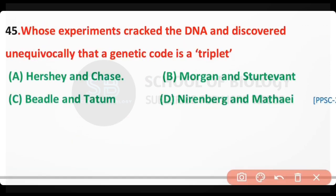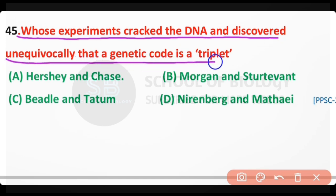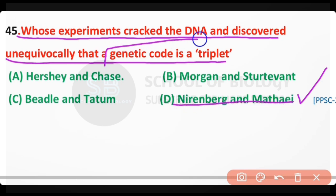Question number 45: Whose experiments cracked the genetic code and discovered unequivocally that the genetic code is a triplet? Options: Hershey and Chase, Morgan and Sturtevant, Beadle and Tatum, or Nirenberg and Matthaei? The correct answer is option D: Nirenberg and Matthaei discovered that the genetic code is a triplet. So this concludes another 15 most important questions about molecular biology.